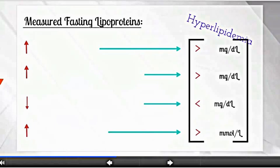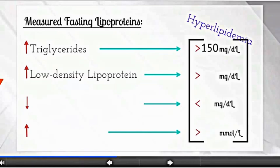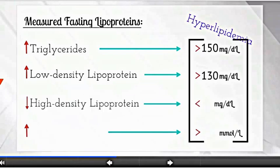Clinically, hyperlipidemia is when triglycerides are greater than 150 mg per deciliter, low-density lipoprotein increases to greater than 130 mg per deciliter, high-density lipoproteins decrease to less than 40 mg per deciliter, and total cholesterol increases to greater than 200 mg per deciliter.